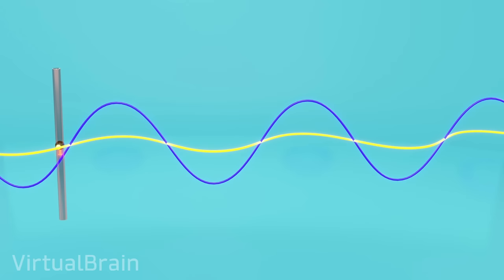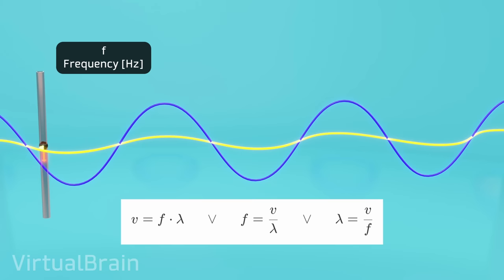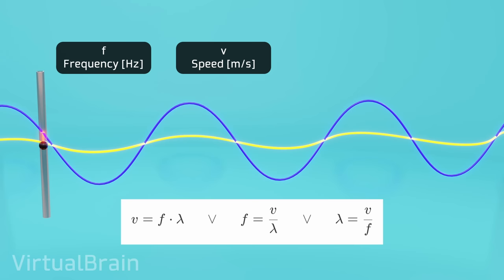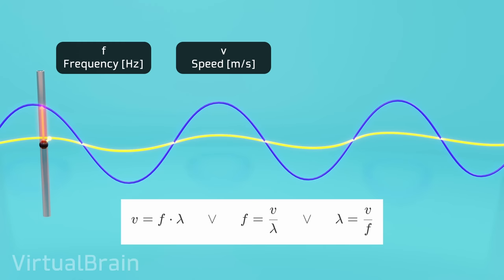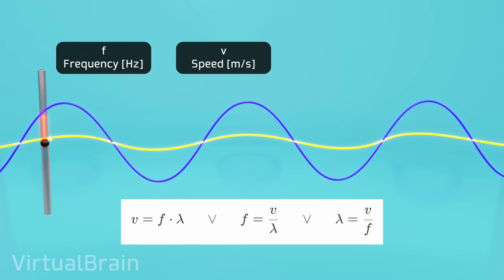Like all waves, they will be described mainly by three related parameters. First, their frequency, which depends mainly on the frequency of the current that generated the magnetic field in the emitting antenna. Second, its propagation speed, which for electromagnetic waves moving in a vacuum is equal to the speed of light, approximately 300,000 kilometers per second, which by the way is a bit redundant because light is an electromagnetic wave.